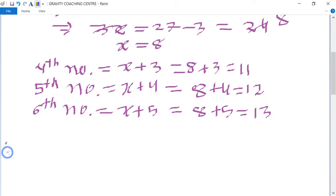Therefore, the sum of the last three numbers is 11+12+13, which equals 36.